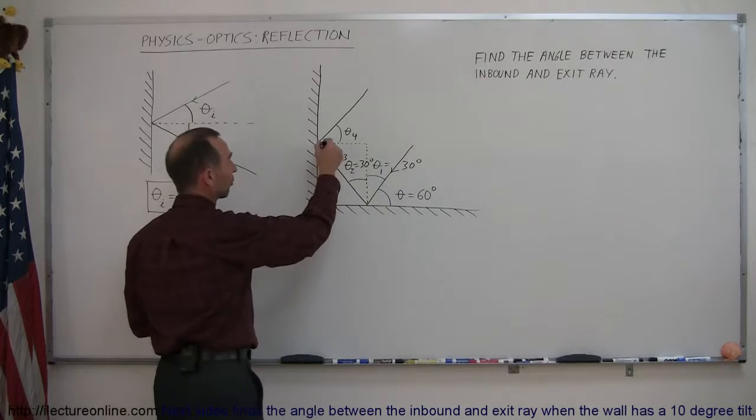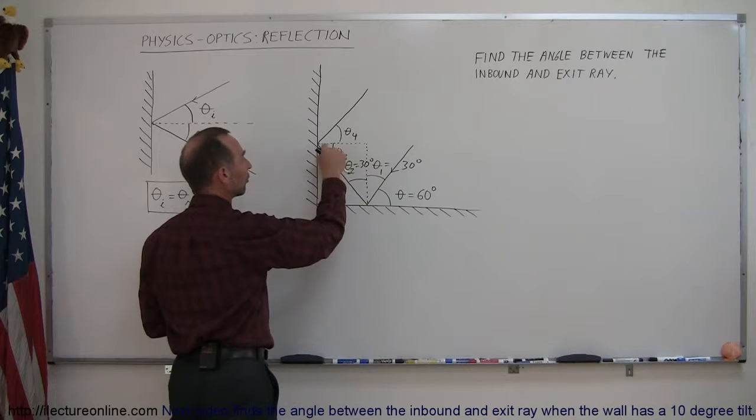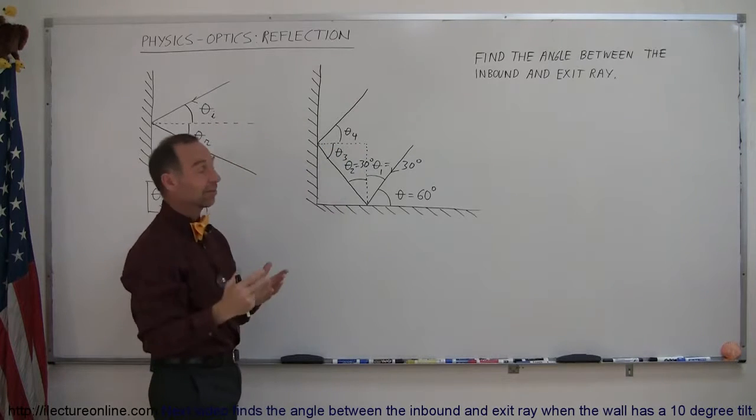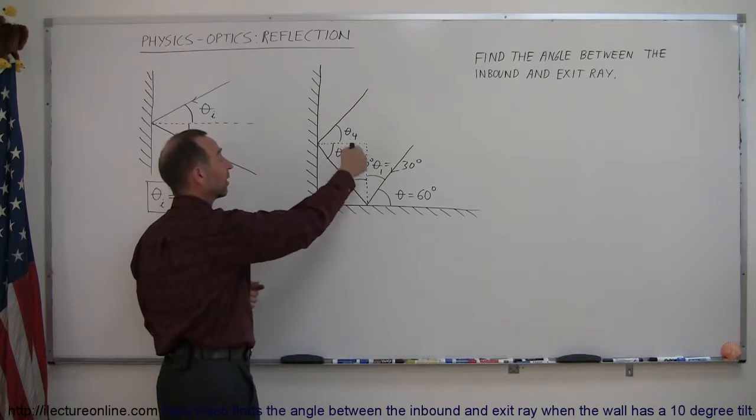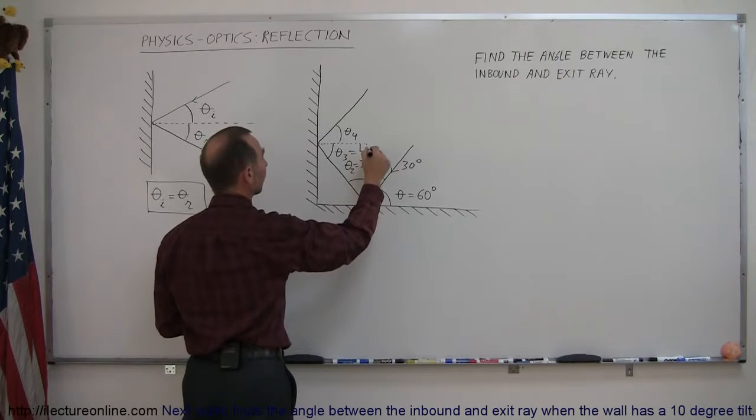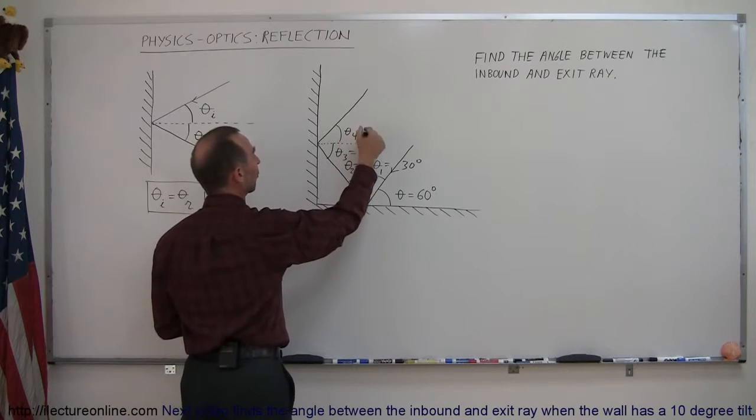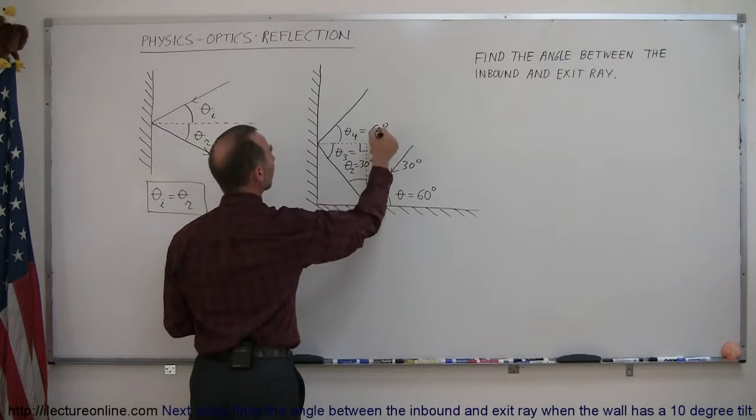Well, we have ourselves a triangle right here. We know that this is a 30 degree angle, this is a 90 degree angle, so this therefore must be a 60 degree angle, because the three angles must add up to 180 degrees. So this being a right angle, this therefore is equal to 60 degrees, which means if theta sub 3 is 60 degrees, then theta sub 4 must also be 60 degrees.